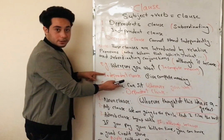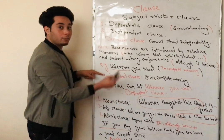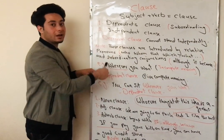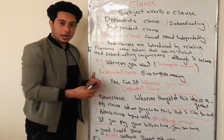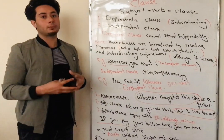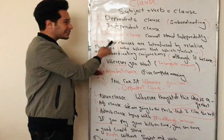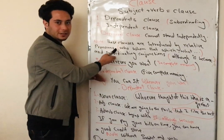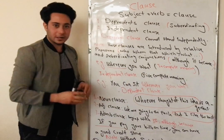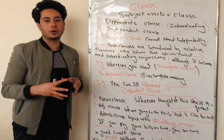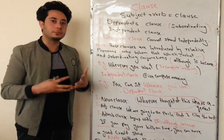An independent clause can give a complete meaning and also it can complete the meaning of a dependent clause. For example, 'You can sit' — it is an independent clause, it has a complete meaning. And let's complete the meaning by combining both: 'You can sit wherever you want.' Now it gives a complete sense and a complete meaning.